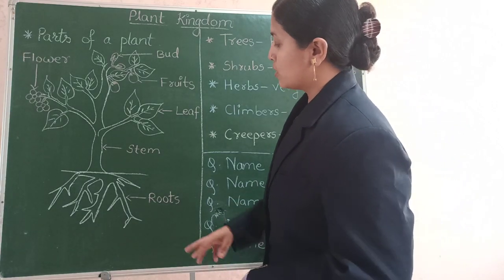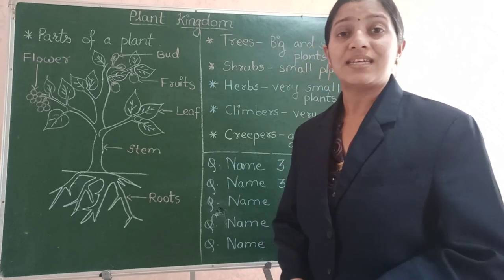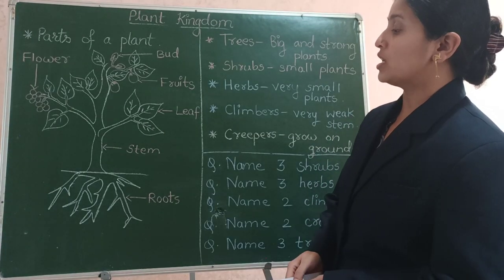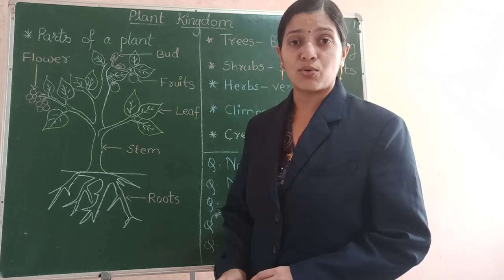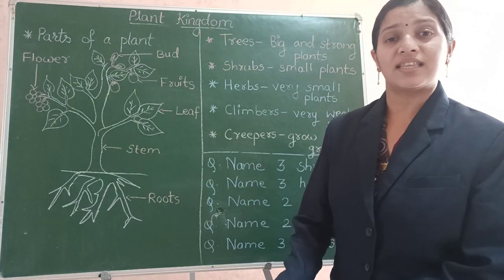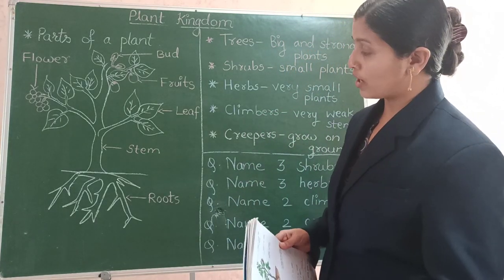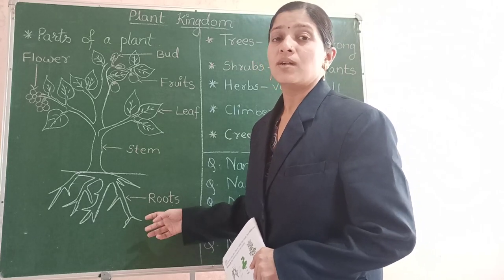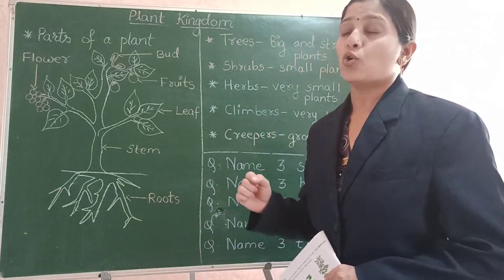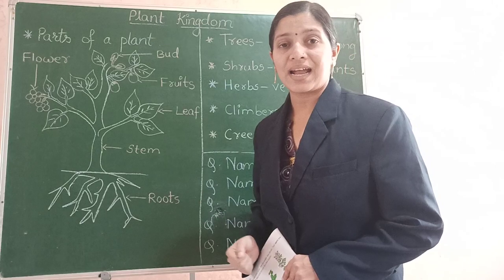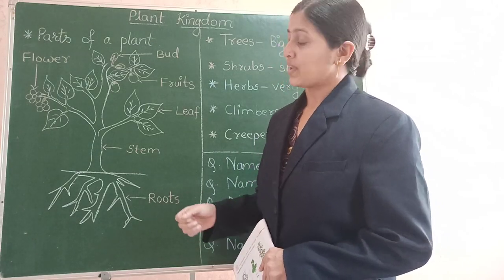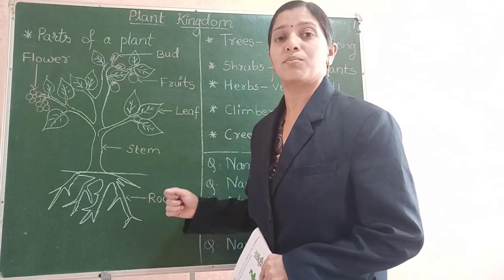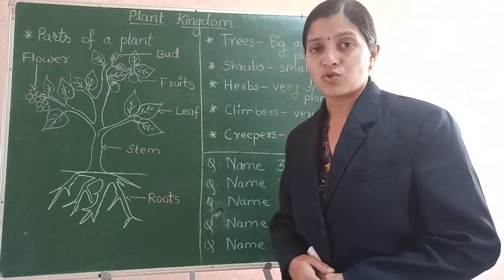The first part of a plant is a root. This root is under the ground or inside the soil. These roots hold the plant tightly and they also absorb the water from the soil.